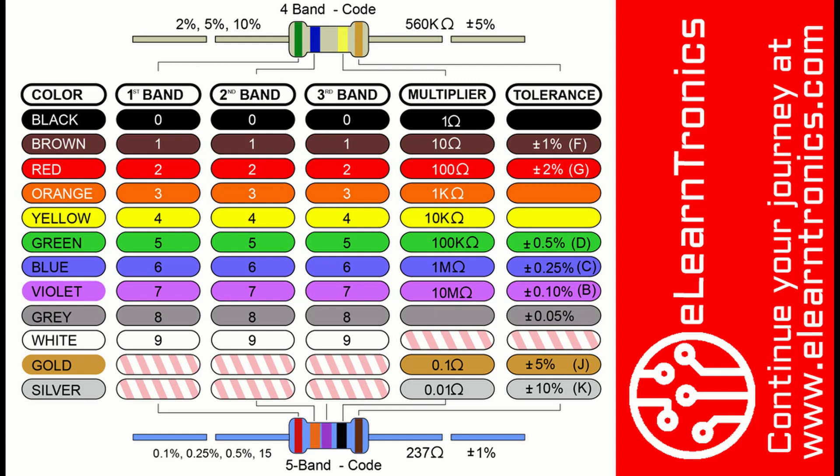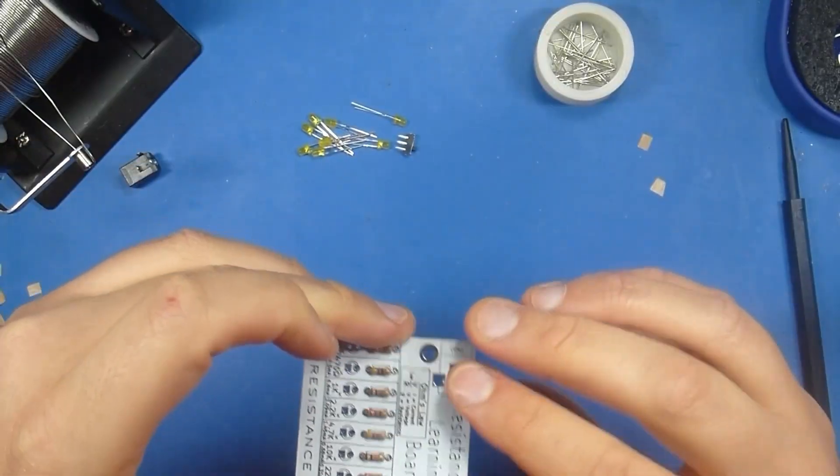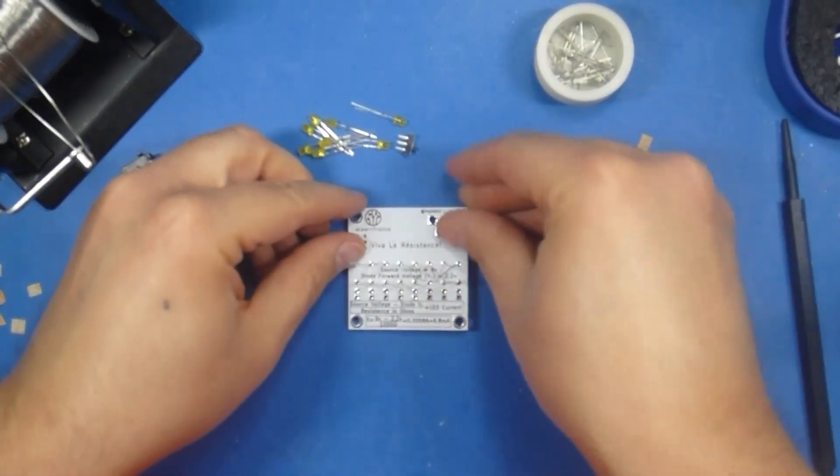And now we will put up the resistance band chart. Go ahead and figure out the resistance value for each of your resistors, and place them in the corresponding sections within the circuit board. And now we have all of our resistors in place so we can start soldering.